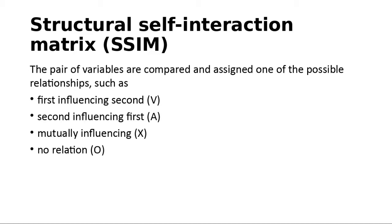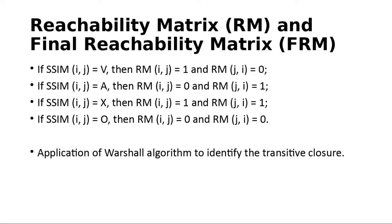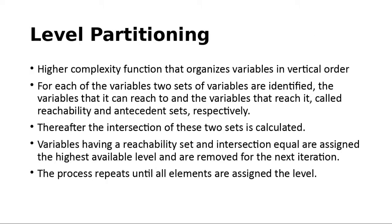The next step is the reachability matrix (RM), calculated based on standard rules. The final reachability matrix incorporates transitivity, for which Warshall's algorithm can be used. In level partitioning, for each variable, two sets are identified: the reachability set and the antecedent set. The intersection of the two is calculated, and if the intersection equals the reachability set for any variable, those variables are assigned to the first level in the first iteration and then removed.